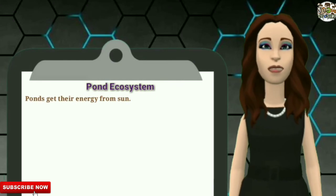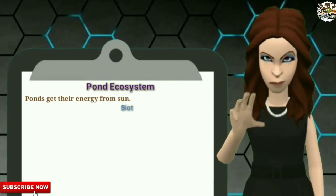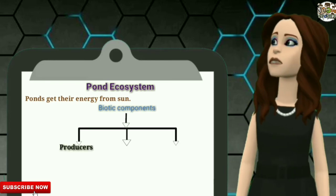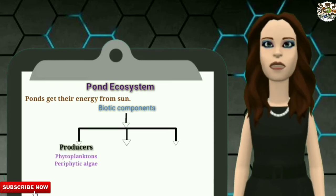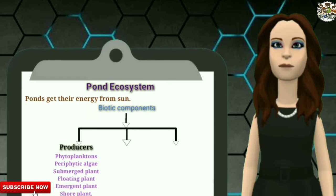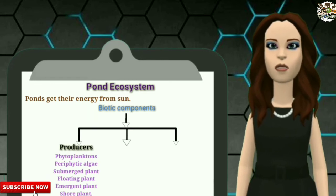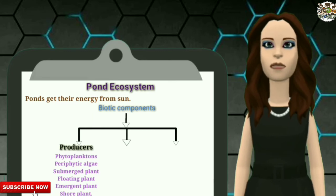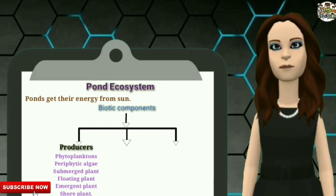Ponds get their energy from the sun. In a pond ecosystem, three biotic components are found. The first is producers, which include phytoplankton, periphytic algae, submerged plants which grow completely under the water, floating plants, emergent plants, and shore plants which grow at the edge of the pond.